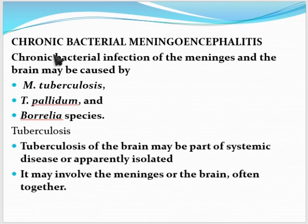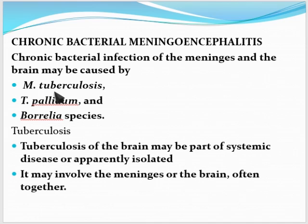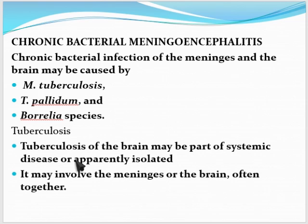Chronic bacterial meningoencephalitis may be caused by Mycobacterium tuberculosis, Treponema pallidum, and Borrelia species. Tuberculosis is the most common cause of chronic meningitis and may be part of systemic disease or isolated. It may involve the meninges alone or also affect the brain parenchyma.